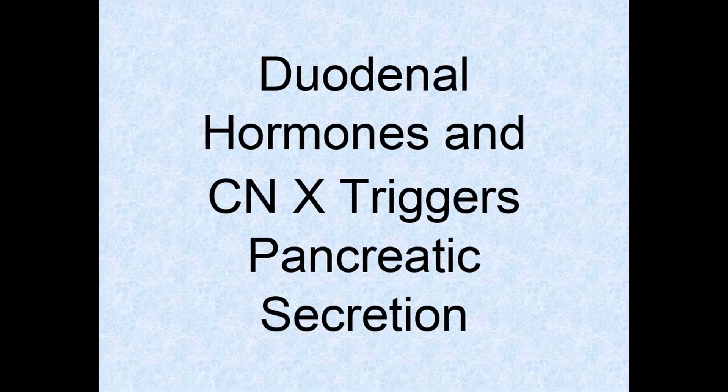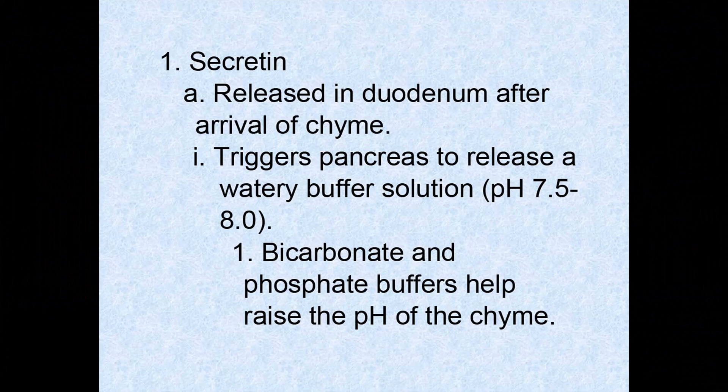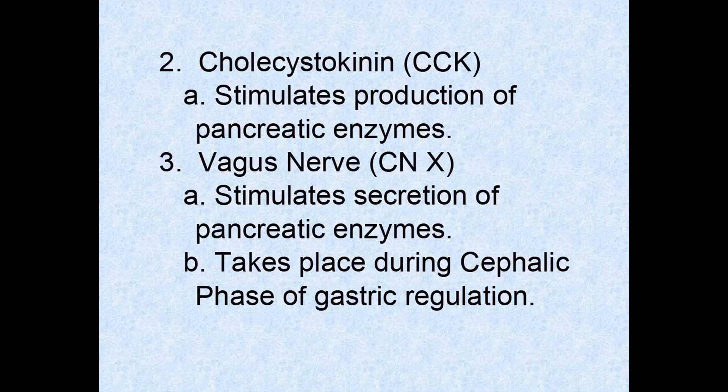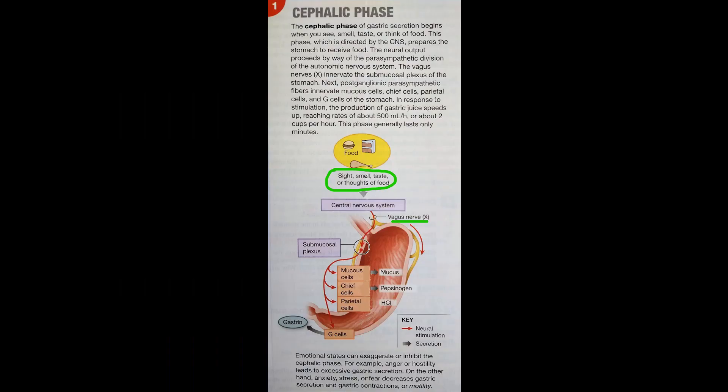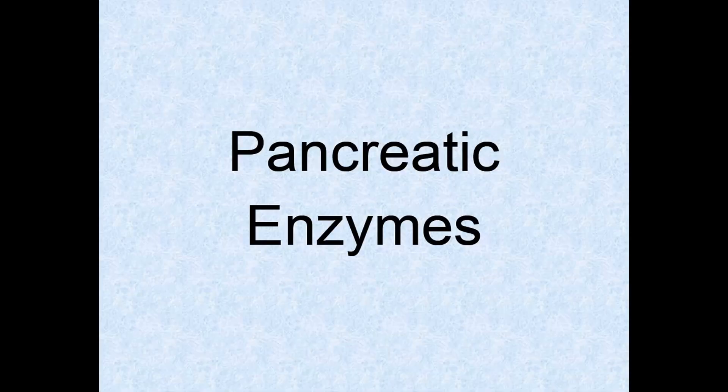The pancreas releases enzymes that help break down food as it passes from the stomach to the duodenum. There are duodenal hormones that activate pancreatic secretion, as well as cranial nerve number 10. The cephalic phase not only triggers gastric secretion but also triggers pancreatic secretion. Here is a list of pancreatic enzymes.